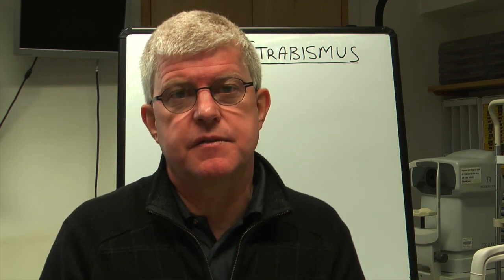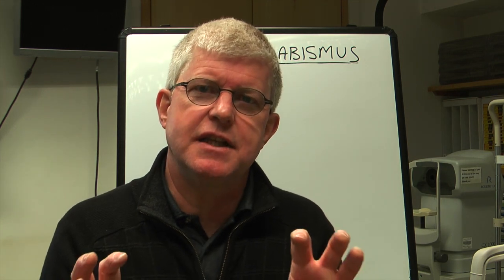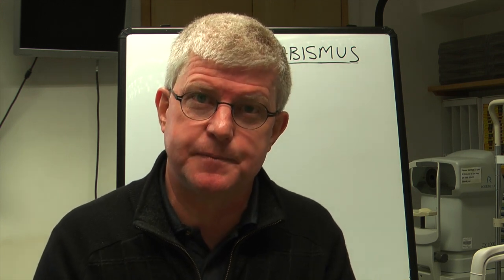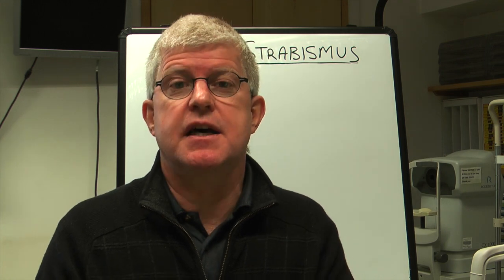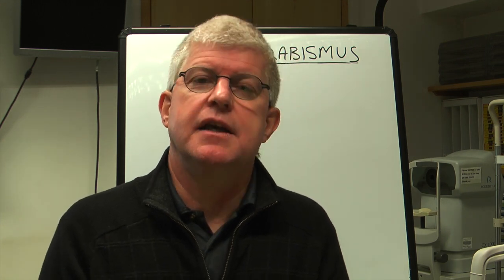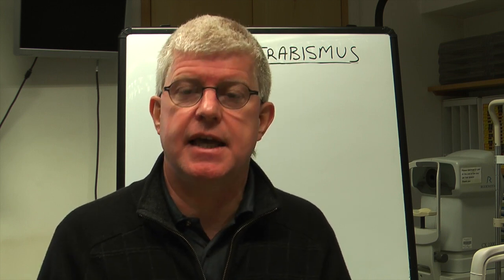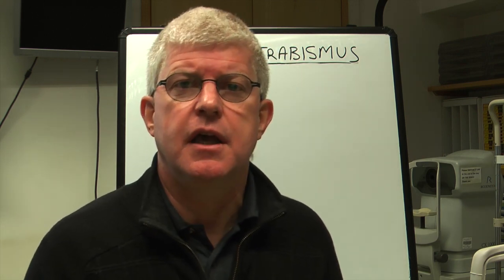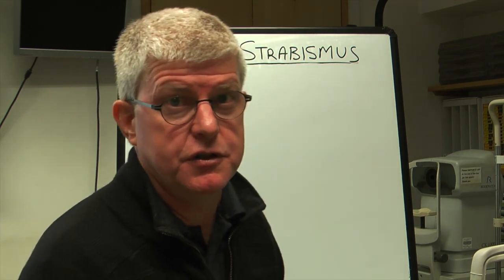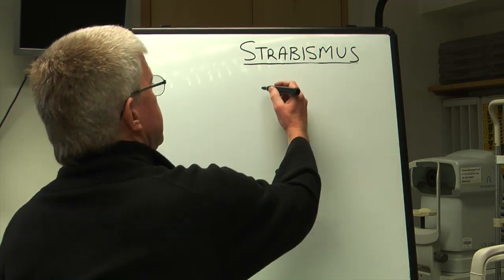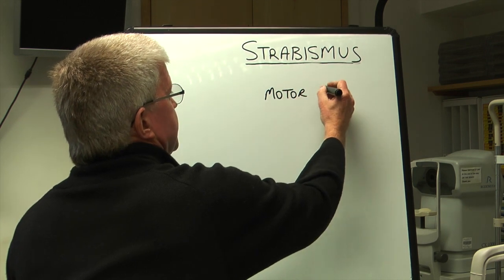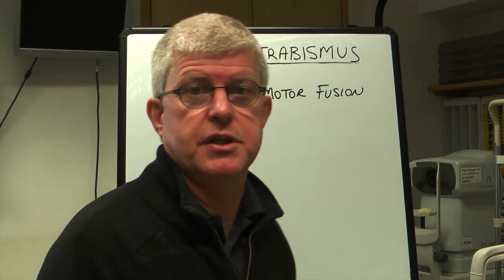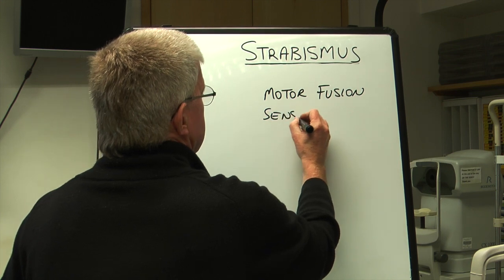The retinal images being produced by those two eyes need to be similar as well — of similar size and similar clarity. If that is happening, then we can enjoy good binocular vision; the brain can handle the information from those two eyes and provide us with good vision. The terminology used for the alignment of the eyes is called motor fusion, and the terminology for the retinal image element is called sensory fusion.